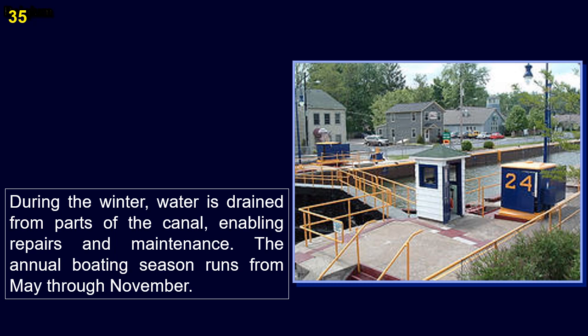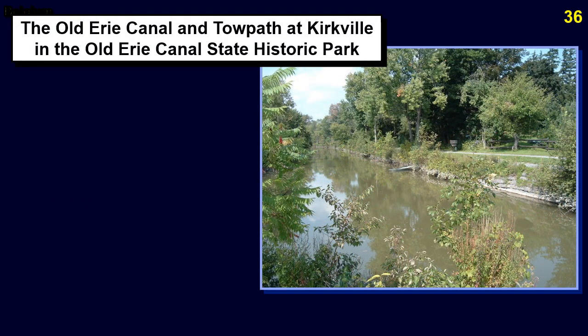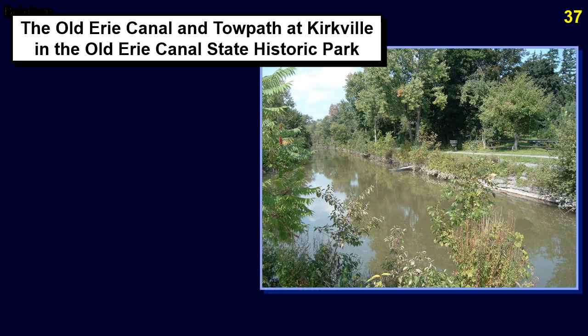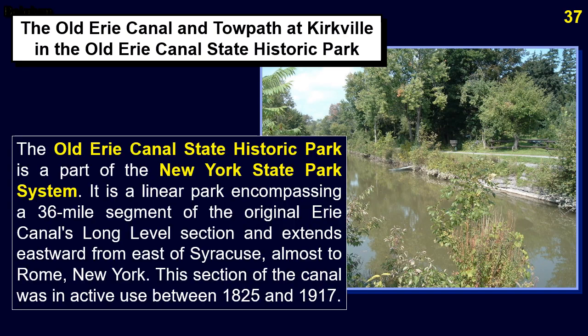The annual boating season runs from May through November. A 36-mile stretch of the old canal is preserved by the State of New York at the Old Erie Canal State Historic Park, a part of the New York State Park system. It is a linear park encompassing a 36-mile segment of the original Erie Canal's long level section, extending eastward from east of Syracuse almost to Rome, New York. This section of the canal was in active use between 1825 and 1917.